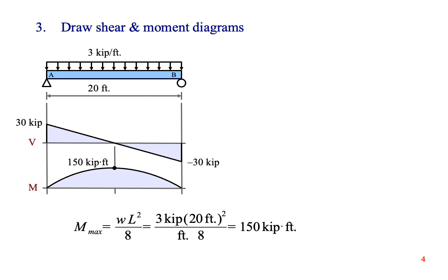Step three is to draw shear and moment diagrams for this beam. It's a uniform distributed load, so the shear diagram is a pair of triangles, and the moment diagram is a parabola with a maximum value at the mid-span of the beam. We can figure out the maximum value in one of two ways. We can either calculate the area of the left-hand triangle in the shear diagram, or we can use the formula method from Appendix F. Either method will give us a maximum value of 150 kip feet.